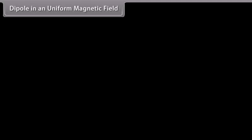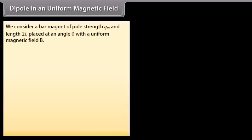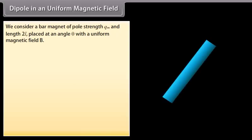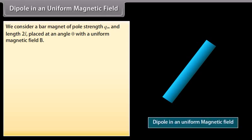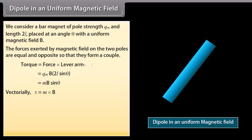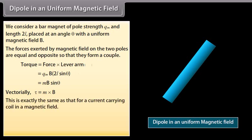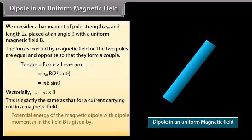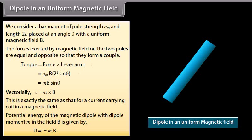We consider a bar magnet of pole strength Qm and length 2L placed at an angle theta with a uniform magnetic field B. The forces exerted by the magnetic field on the two poles are equal and opposite, so they form a couple. Torque equals force times lever arm, giving torque = MB sin θ. Vectorially, τ = M × B. This is exactly the same as that of a current-carrying coil in a magnetic field. The potential energy of the magnetic dipole with dipole moment M in field B is given by the negative dot product of M and B.